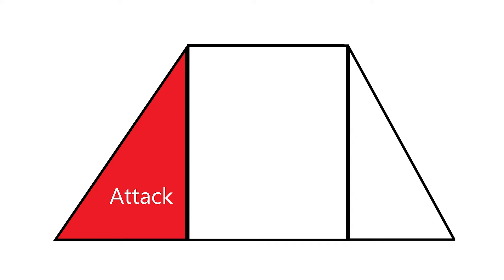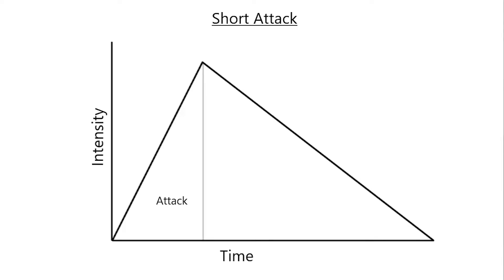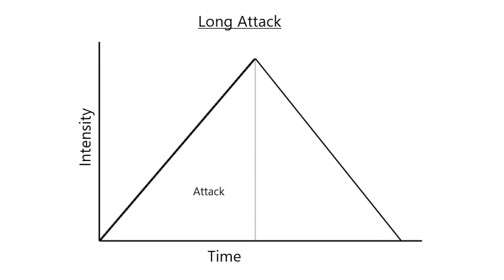Attack is the duration of time it takes a note to reach its maximum intensity after being played. Instruments with short attack time include percussion, piano, and plucked string instruments such as harpsichord and guitar — the sound quickly reaches its maximum intensity. Instruments capable of a long attack time include woodwinds, brass, and bowed string instruments like violin, where notes can start quiet and slowly build to their maximum intensity.